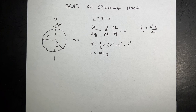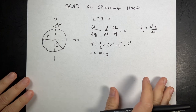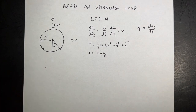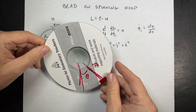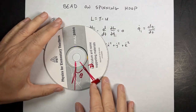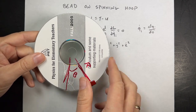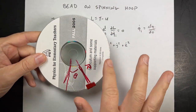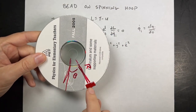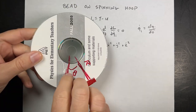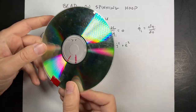This is a fairly classic and common problem for Lagrangian mechanics, and it's pretty fun too, so let's just go ahead and do it. This is a bead on a spinning hoop. I made a little prop here that may help us. Imagine this CD is a wire, and then I have this bead that can slide up and down. This is the Y direction, and then it's going to spin like this.